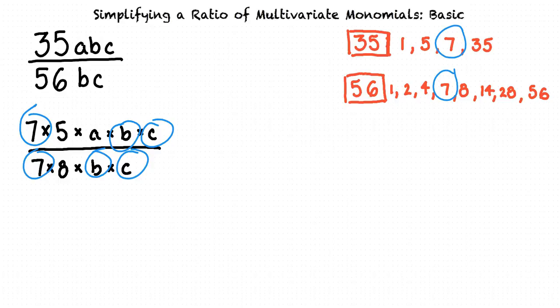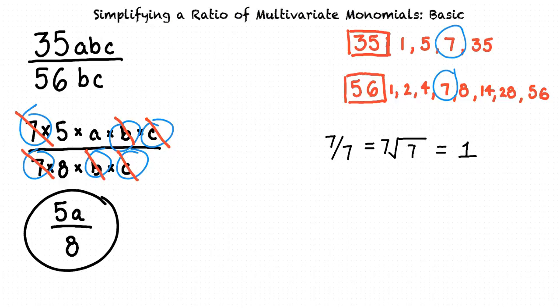Next, we can eliminate common variables found in the numerator and denominator of our problem. So the 7's cancel each other out because 7 over 7 is equivalent to 7 divided by 7, which is 1. The same thing goes for the common variables. The b's cancel each other out and the c's cancel each other out. And what we're left with is our final answer of 5a over 8.